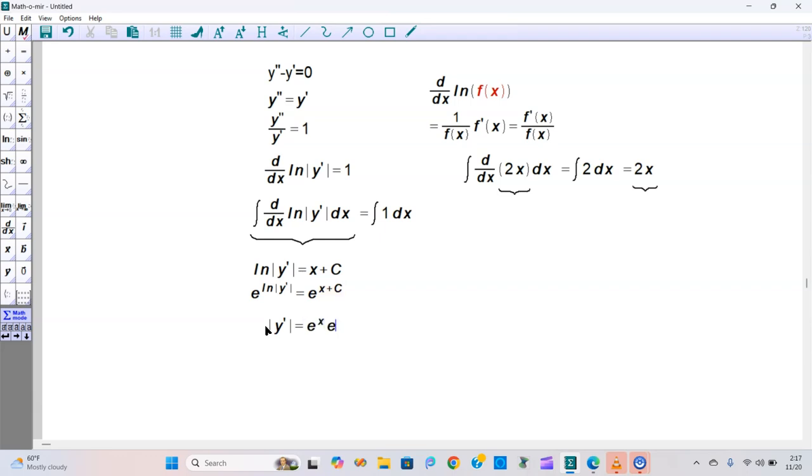This equals e to the x times e to the C, breaking apart the right hand side into a product of these two. That's going to be y prime equals plus or minus e to the C times e to the x. Applying the meaning of absolute value, when you do that you need a plus or minus because absolute values are both positive.